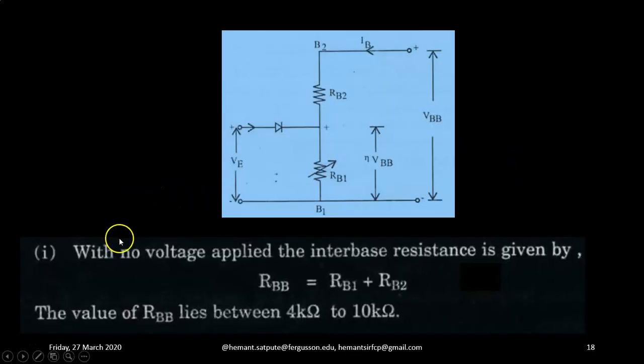Now let us see this circuit action based on this equivalent circuit. This is the equivalent circuit case number one with no voltage applied between emitter and base B1. The interbase resistance is given by RBB equals RB1 plus RB2. So these two resistances will be in series.